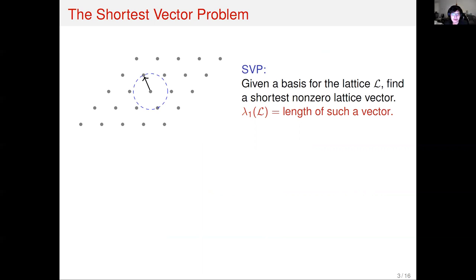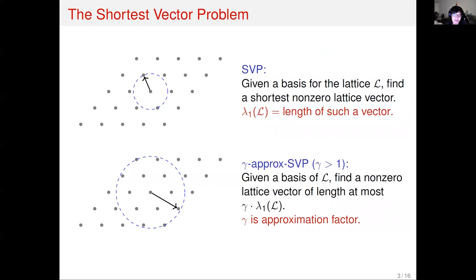Besides SVP, we can also define its approximation version — that is, gamma-approximate SVP. Instead of outputting a shortest non-zero lattice vector, we now output a non-zero lattice vector such that its length is at most gamma times lambda_1. The bigger the approximation factor, the easier the problem is.